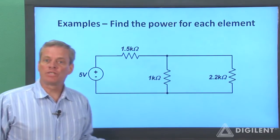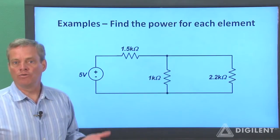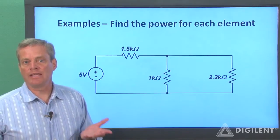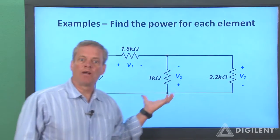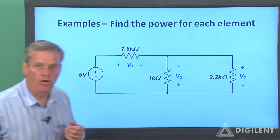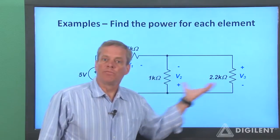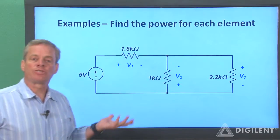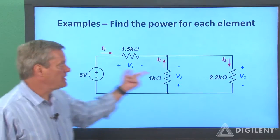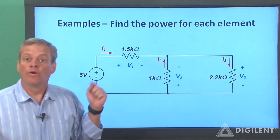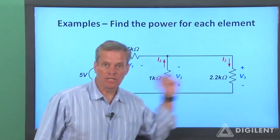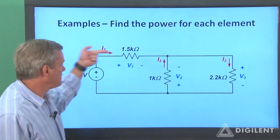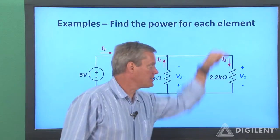Of course, the first thing we have to do is define our unknowns and choose reference voltage polarities and current directions for the circuit. I'm going to arbitrarily choose reference voltage polarities for each circuit element as shown. Once the assumed polarities are chosen, the reference current directions must be as shown here. Notice that I always follow the passive sign convention for the resistors by choosing positive current to be entering the positive voltage terminal.